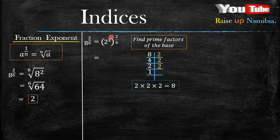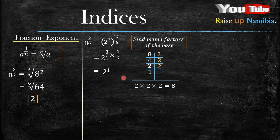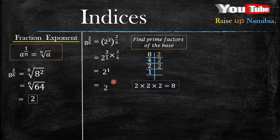We can multiply by also making the 3 inside into a fraction by putting it over 1. So we have 2 raised to the power 3 over 1, multiplied by 2 over 6. When you multiply these two fractions, the answer will be 1. The base stays 2, and what is 2 raised to the power 1? It's just 2. That is your final answer.